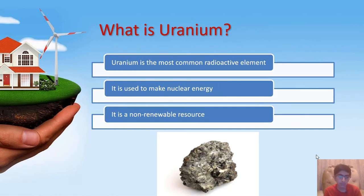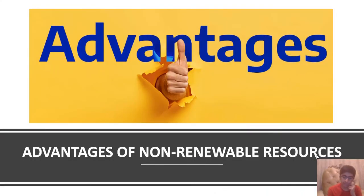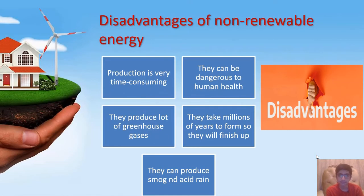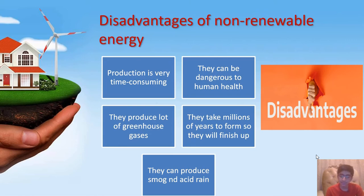Uranium is the most common element used for the production of nuclear energy. It is a radioactive element, which is why it can produce nuclear energy. It is a non-renewable energy resource but has a very abundant supply, which is why it is used in nuclear energy production. The advantages of non-renewable resources are: they provide a lot of energy, are easy to use and store, can be bought at affordable prices, can be easily transported, and do not depend on other things. The disadvantages are: production is very time consuming, they can be dangerous to human health, they produce a lot of greenhouse gases, they take millions of years to form so they will eventually be depleted, and they can produce smog and acid rain.